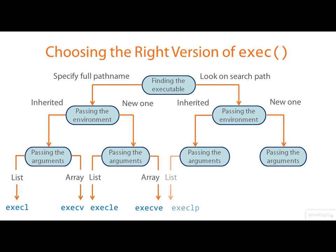There are versions of exec for each of these cases with one exception — there is no call for one case shown here; if it existed, it would be called execLPE, but for some reason there is no such function. These seven variants look confusing, but there is method in the naming. If the name has a P in it, we will use the search path to find the executable. If the name has an L in it, the arguments are passed as an explicit list; if it has a V, they're passed as a vector — an array. Finally, if the name ends in an E, we get to pass a new environment; otherwise, we simply stick with the one we've got.